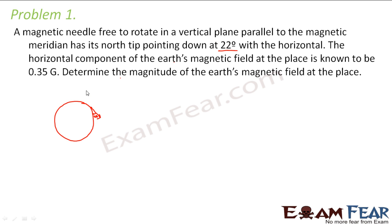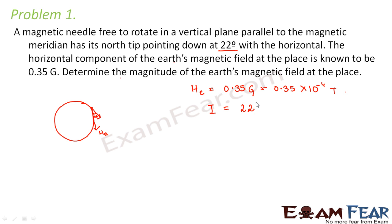The horizontal component of the Earth's magnetic field at the place is known to be 0.35 gauss, which is equal to 0.35 × 10⁻⁴ tesla. This angle is nothing but the angle of inclination, or what we know as magnetic dip, because this is the angle which the needle makes with the horizontal surface of the Earth — it makes 22 degrees with the horizontal.